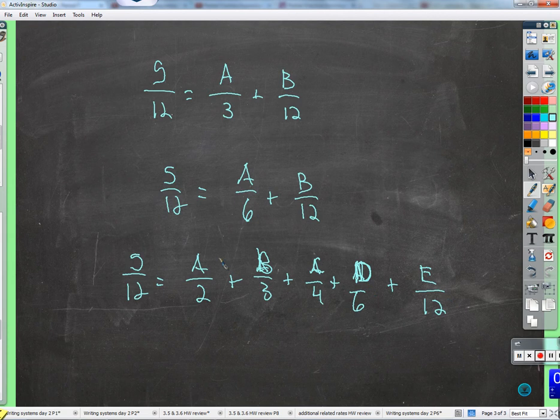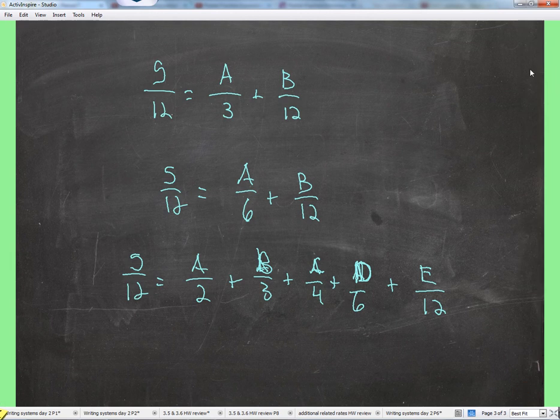And, of course, we would want these numerators to be constants. We wouldn't want to complicate the numerators. We would ideally want these to be constants. Of course, there's no way to figure out what a, b, c, d, and e have to be. They could be anything, right? I think that's kind of the case we're looking at here.